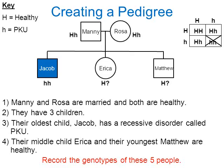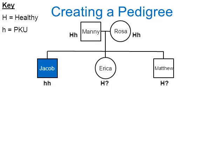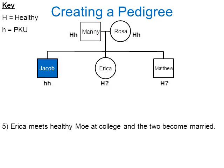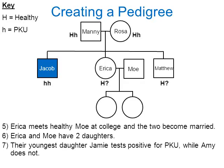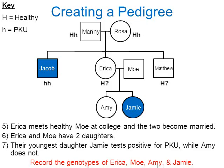Moving on: Erica goes to college and meets a healthy gentleman named Moe, and they marry. Moe is connected to Erica in the pedigree. Erica and Moe have two daughters. Their youngest daughter Jamie tests positive for PKU, but Amy does not. The youngest is on the right, so I color in the circle for Jamie on the right and leave Amy's circle on the left blank.